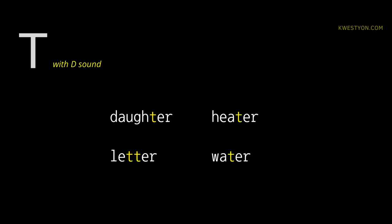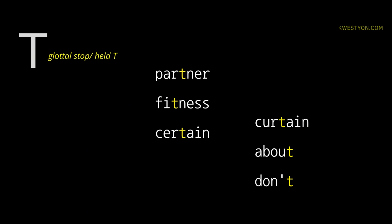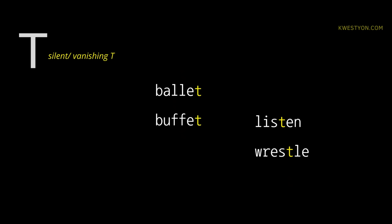The first one is the true T sound. There are four different ways to pronounce the letter T in American English: the D sound, like daughter, letter, heater, water; the glottal stop or held T, like partner, fitness, certain, curtain, about, don't; and the silent T or vanishing T, like ballet, buffet, listen, wrestle. But these three sounds will be in a separate video. Today, I'm only going to talk about the true T.